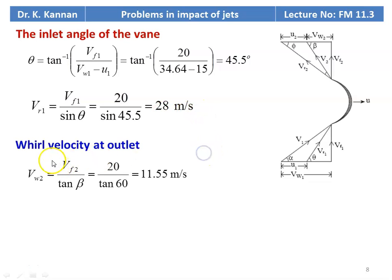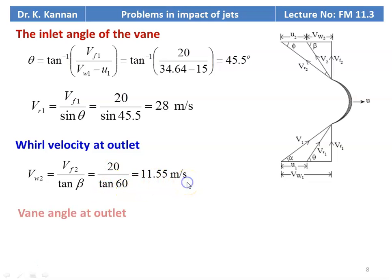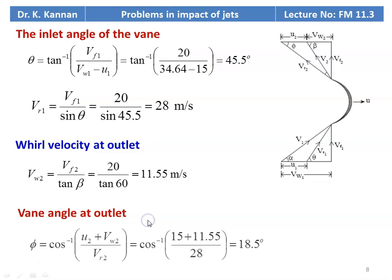For the outlet velocity: Vw2 = Vf2 / tan(beta). Since Vf2 = Vf1 = 20 m/s, Vw2 = 20 / tan(60°) = 11.55 m/s. The vane angle at the outlet phi = cos⁻¹((U2 + Vw2) / Vr2) = cos⁻¹((15 + 11.55) / 28) = 18.5°.